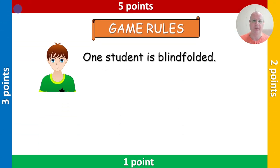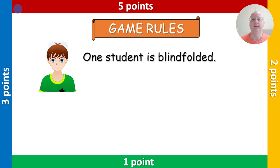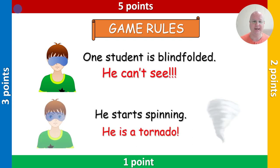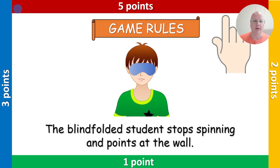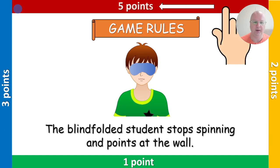And now we play a tornado game. Here's how you play it: you invite a student from one team — they play rock, paper, scissors to decide who goes first, and you invite the student from the winning team. This student is blindfolded and can't see. Then he or she starts spinning and becomes a tornado. At some point, the blindfolded student should stop spinning and point at the wall.